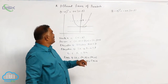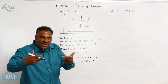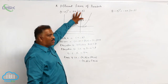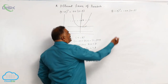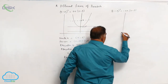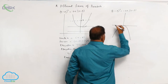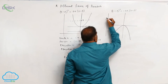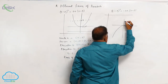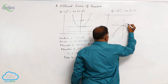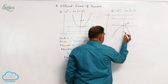Now, if this parabola is rotated by an angle of 180 degrees, it will become a totally downward parabola. The coordinate axis is shown, and the vertex is at alpha comma beta. This is the directrix and this is the focus.